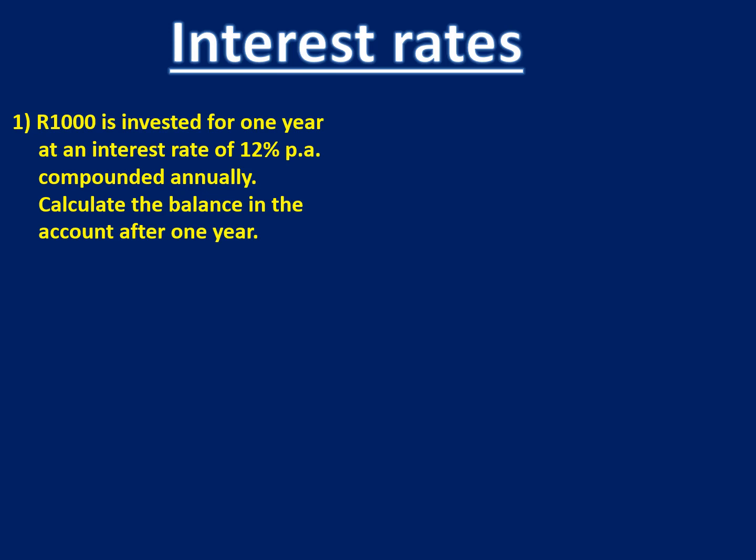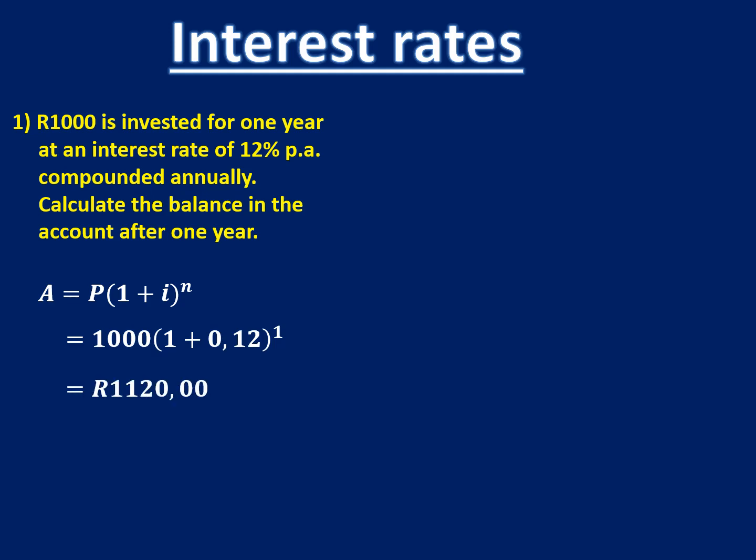We want to calculate the balance in the account after one year. It's compound interest, so we use our normal compound interest formula. Our interest rate is 12%, so we convert that to a decimal of 0.12. Typing that into the calculator, we get an answer of 1,120 Rand.